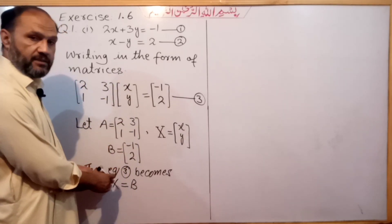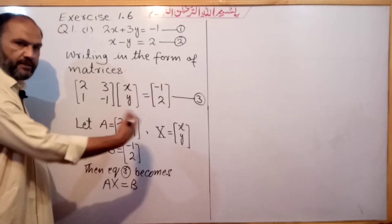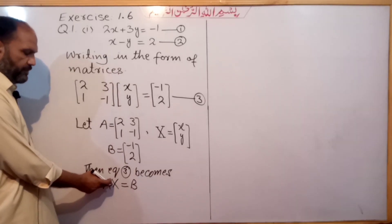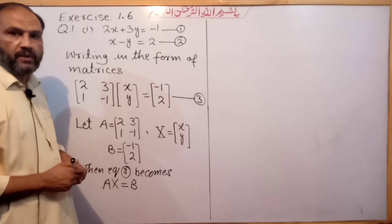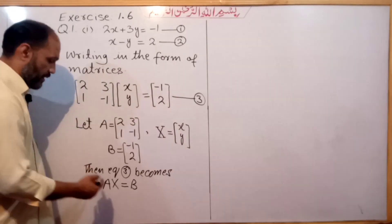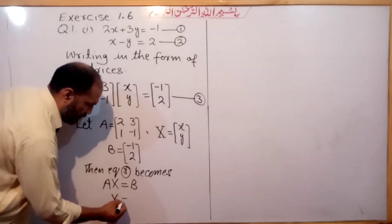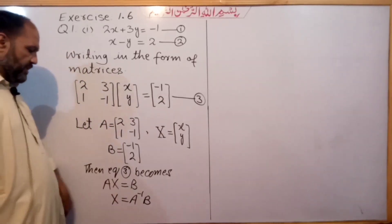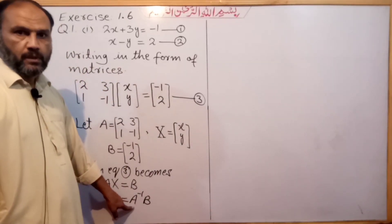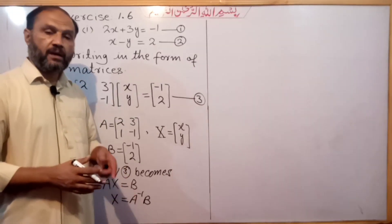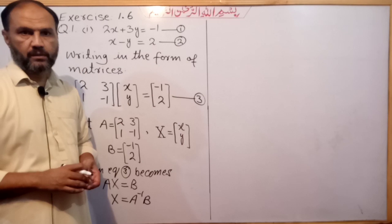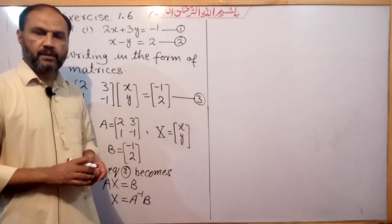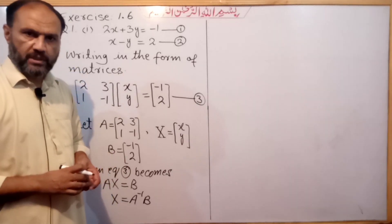From equation 3, AX = B, multiplying both sides by A inverse gives X = A inverse B. To find A inverse, we first check the determinant of A. If the determinant of A equals 0, the solution set is not possible. If it is other than 0, the solution set is possible.